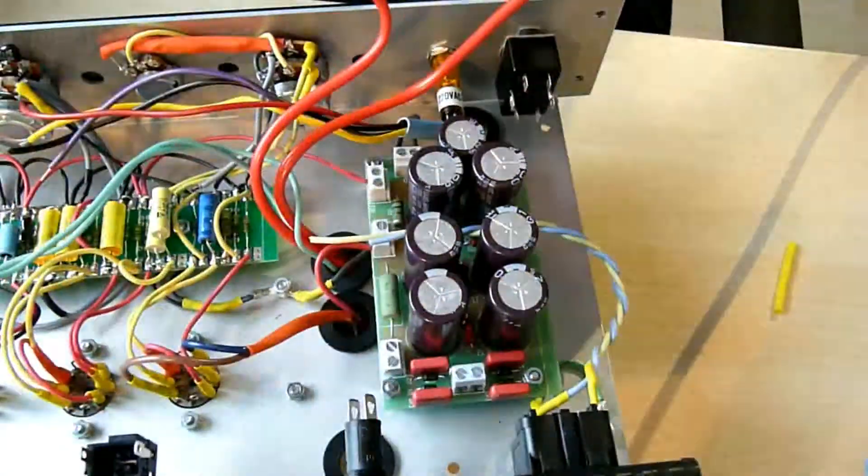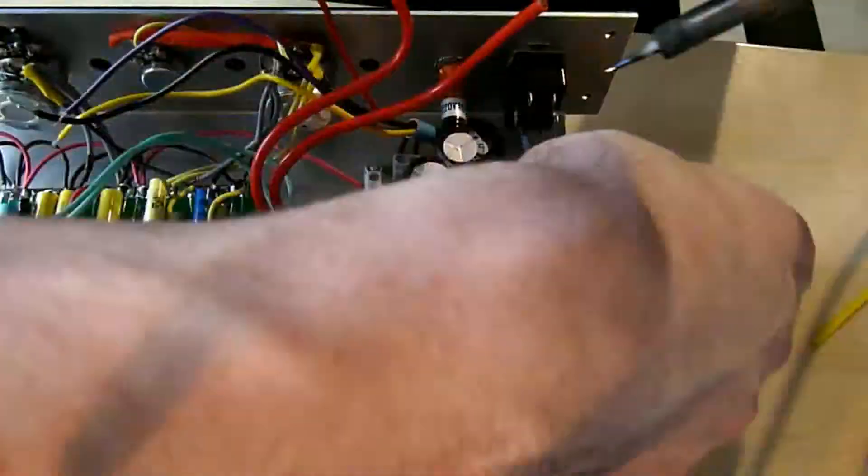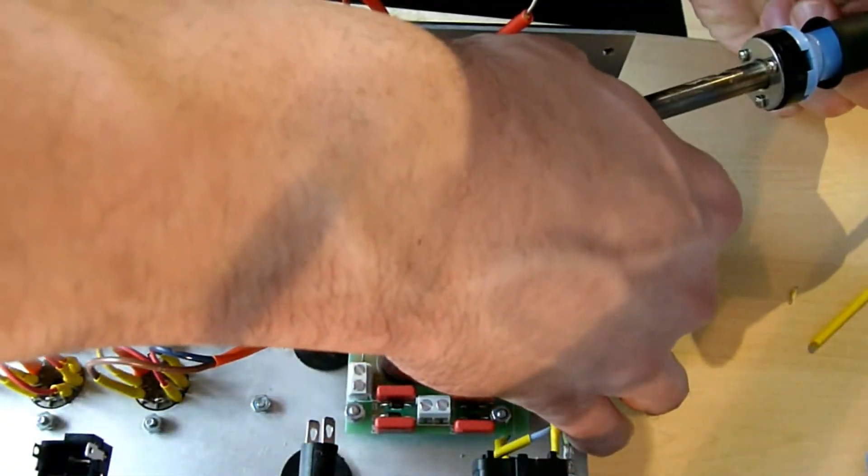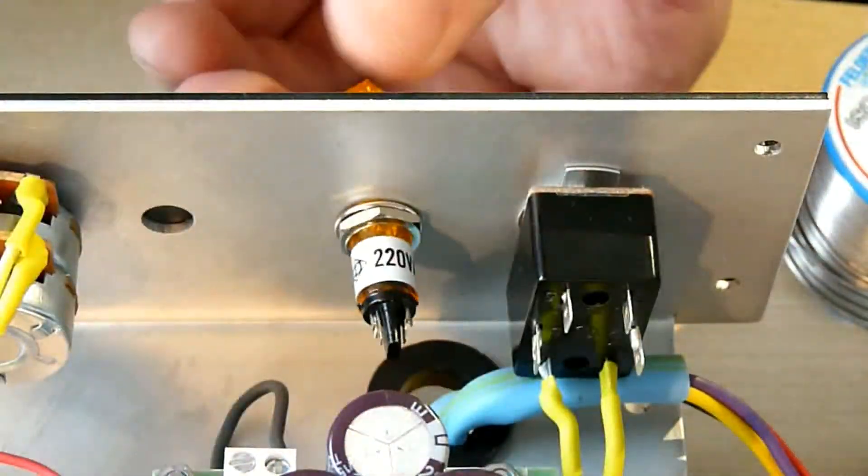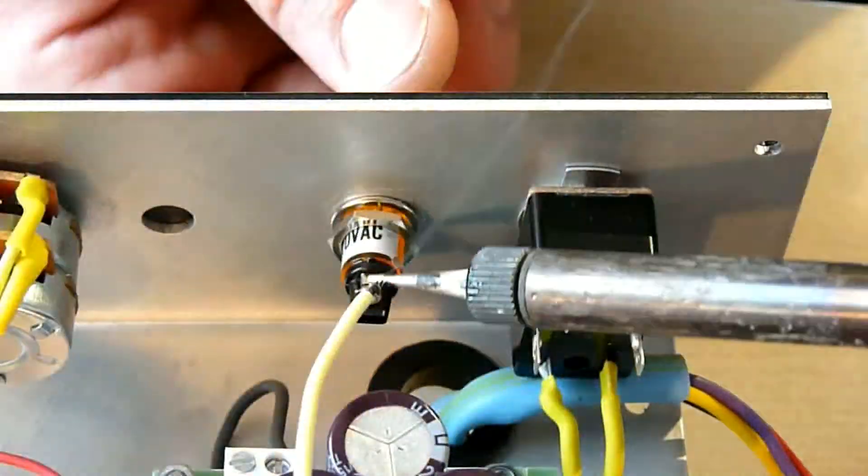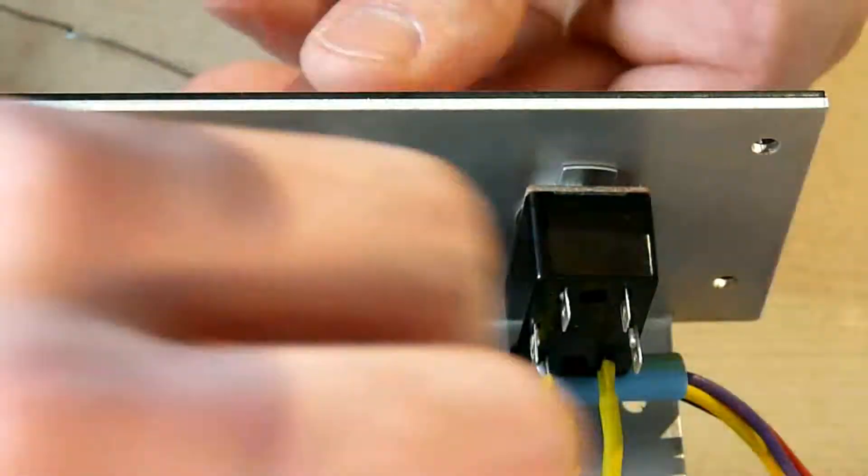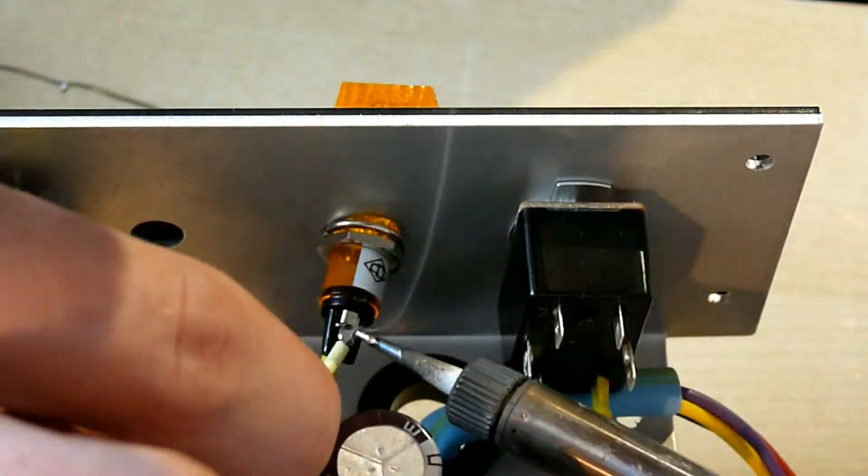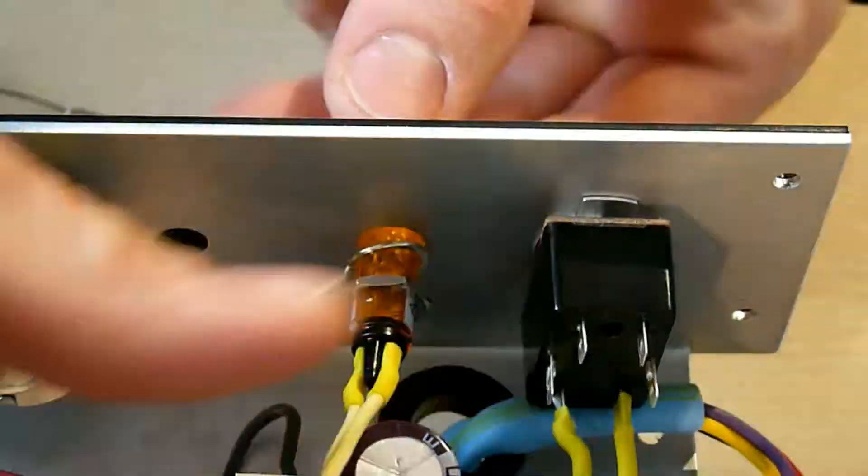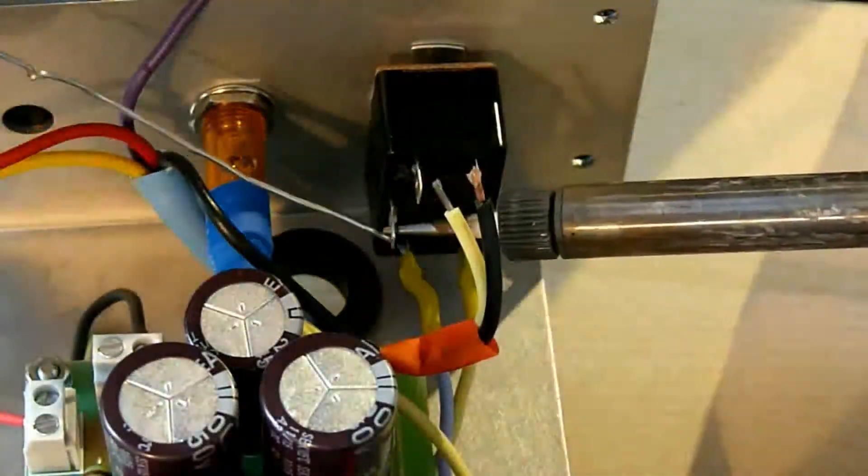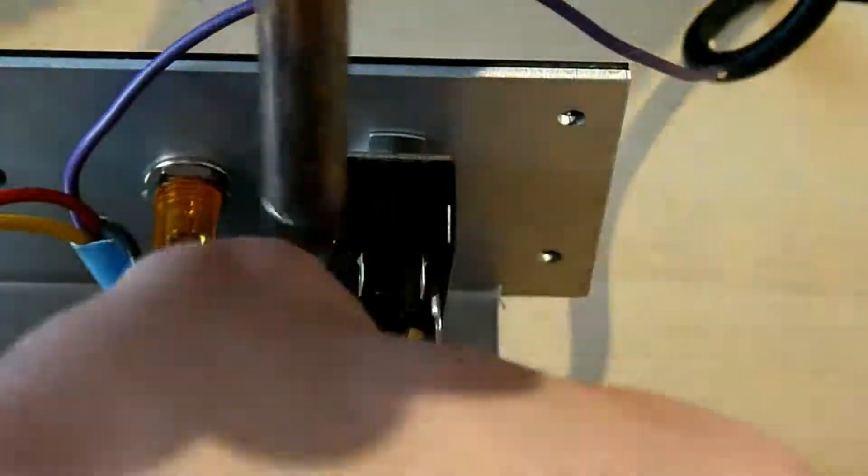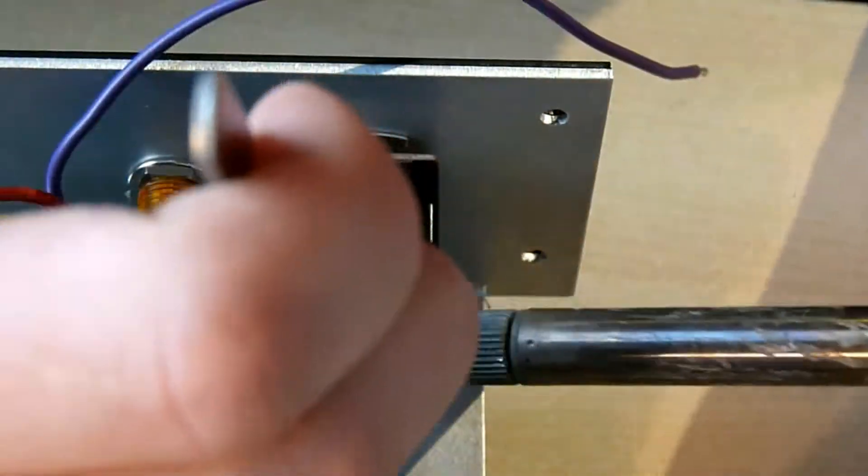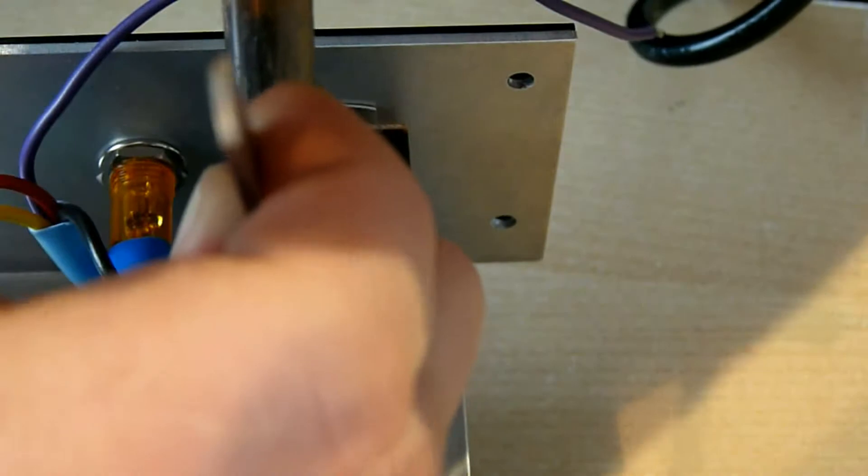I connect the power plug to the on off switch. The contacts of the status light get connected to the switch together with the black and purple cable of the Hammond transformer.